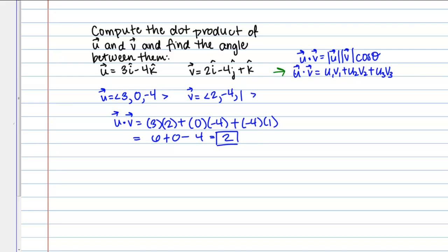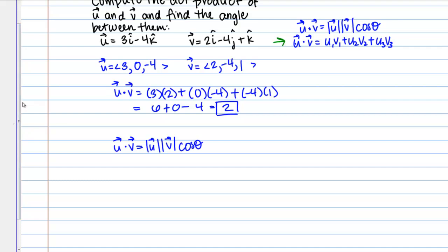Now what I can do is I can use the other definition to solve for theta, which is what I ultimately want to find. So here's my other definition, u dot v equals magnitude of u times magnitude of v times cosine theta. So I'm interested in knowing theta, so let's solve this for theta. So I get u dot v over magnitude of u times magnitude of v equals cosine theta.